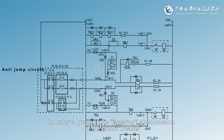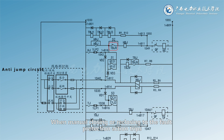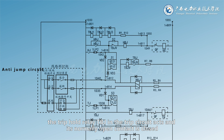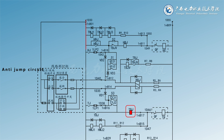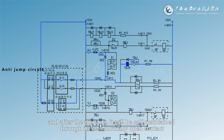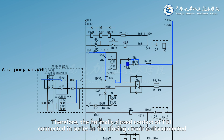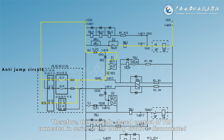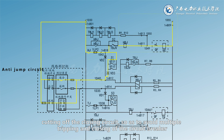In order to prevent the jumping phenomenon of the circuit breaker, an anti-tripping circuit is set in the operation circuit. When manual closing or REC closing to a fault causes protection action to trip, the trip hold relay TBJ in the trip circuit acts and its normally open contact is closed. When the closing pulse is not released, the closed TBJ normally open contact will make the anti-tripping relay TBJ act, and after TBJ acts, it will be self-maintained through its own normally open contact. Therefore, the normally closed contact of TBJ connected in series to the closing circuit is disconnected, cutting off the closing circuit so as to avoid multiple tripping and closing of the circuit breaker.